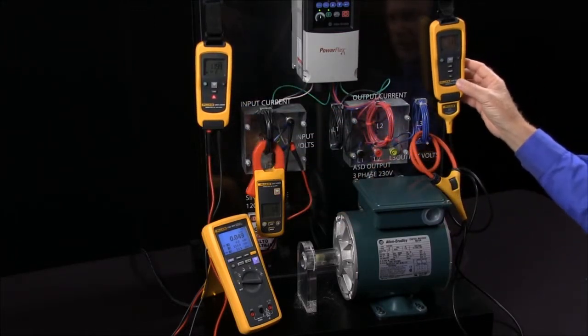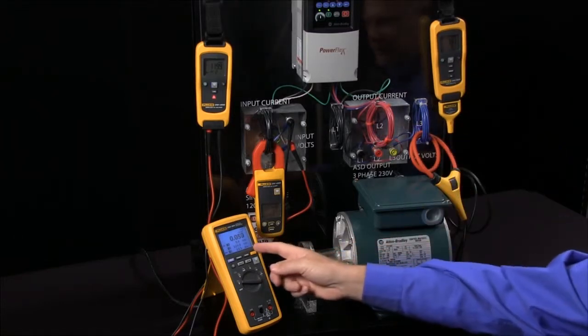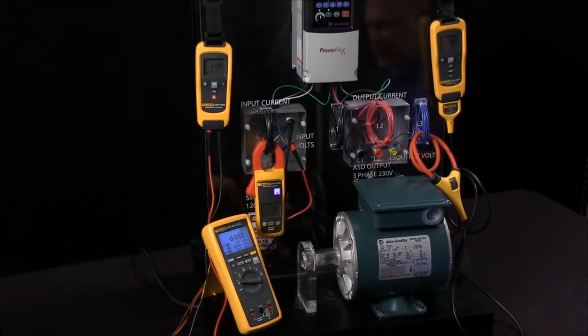And on the output over here, we have 13.1 amps using the flex clamp. So this is how we would configure the Fluke CNX 3000 to read data remotely from modules that are up to 60 feet away.